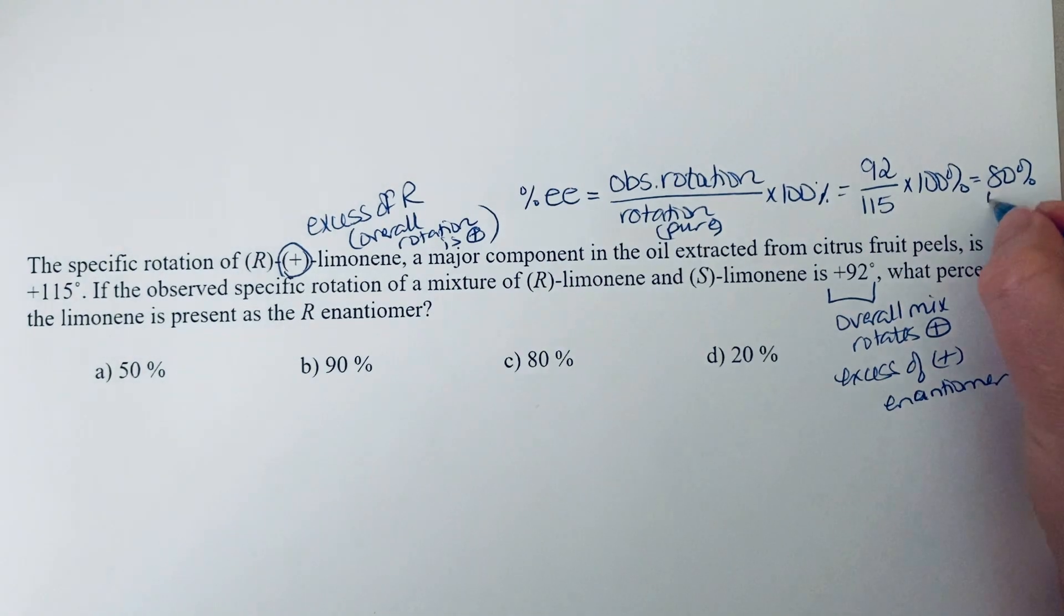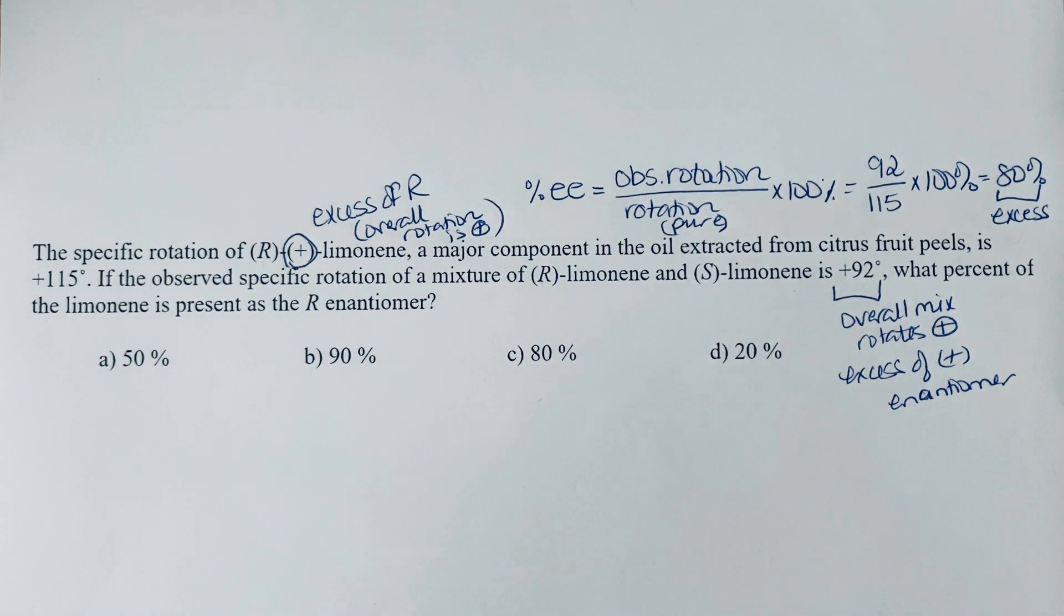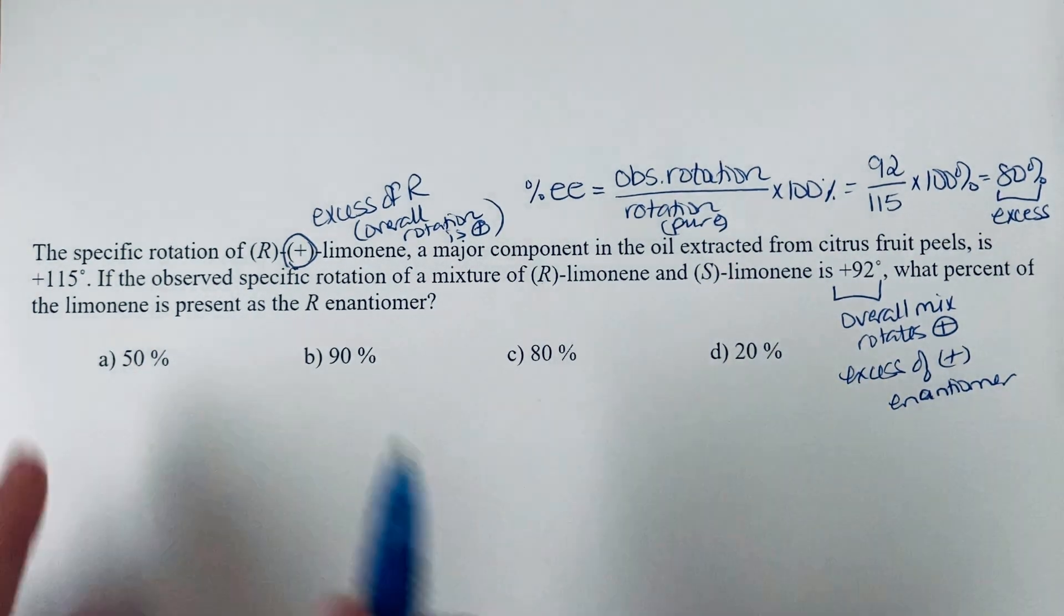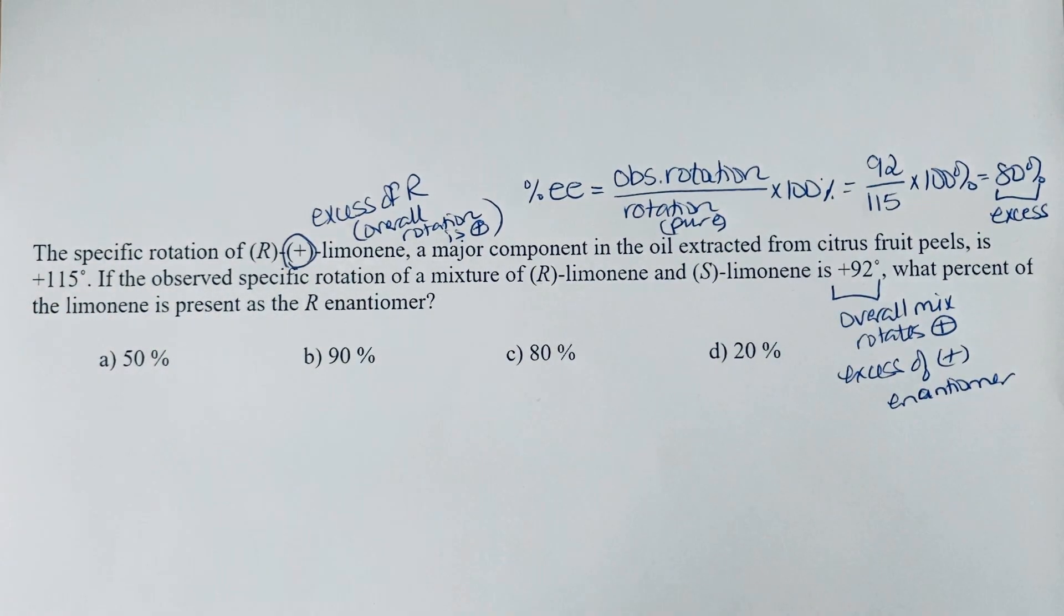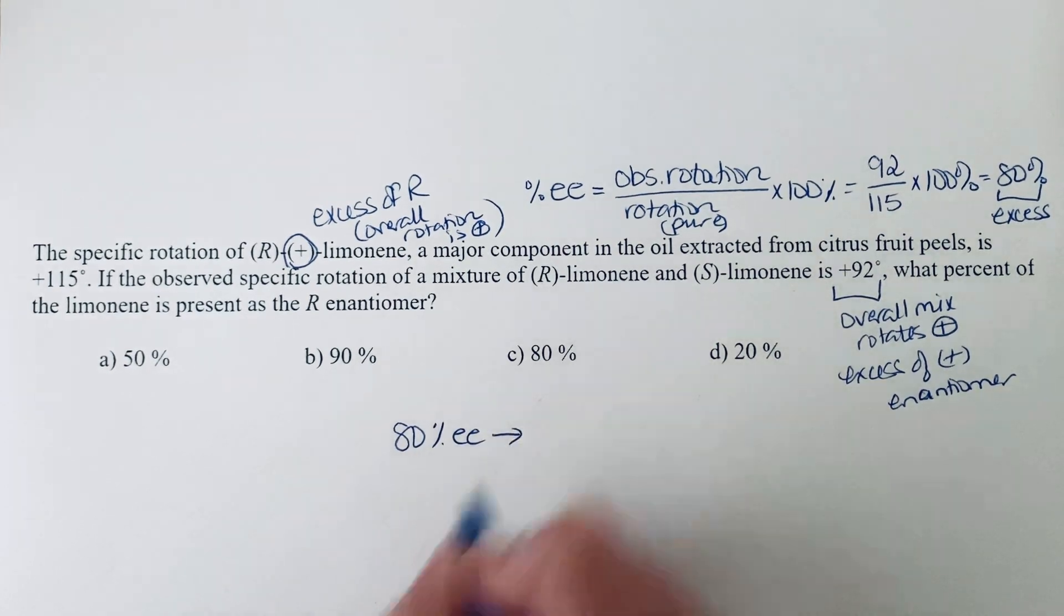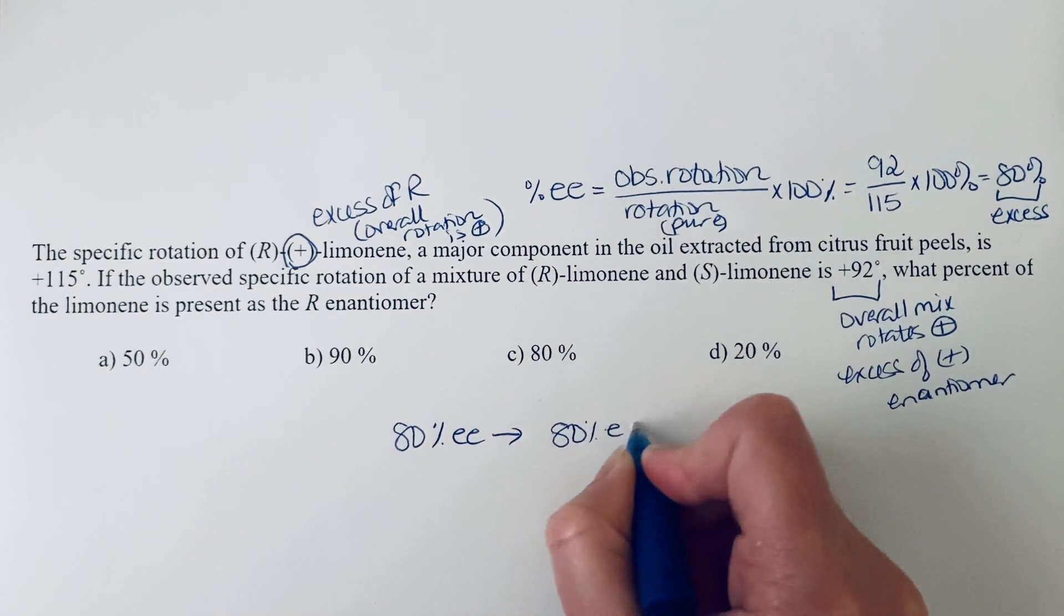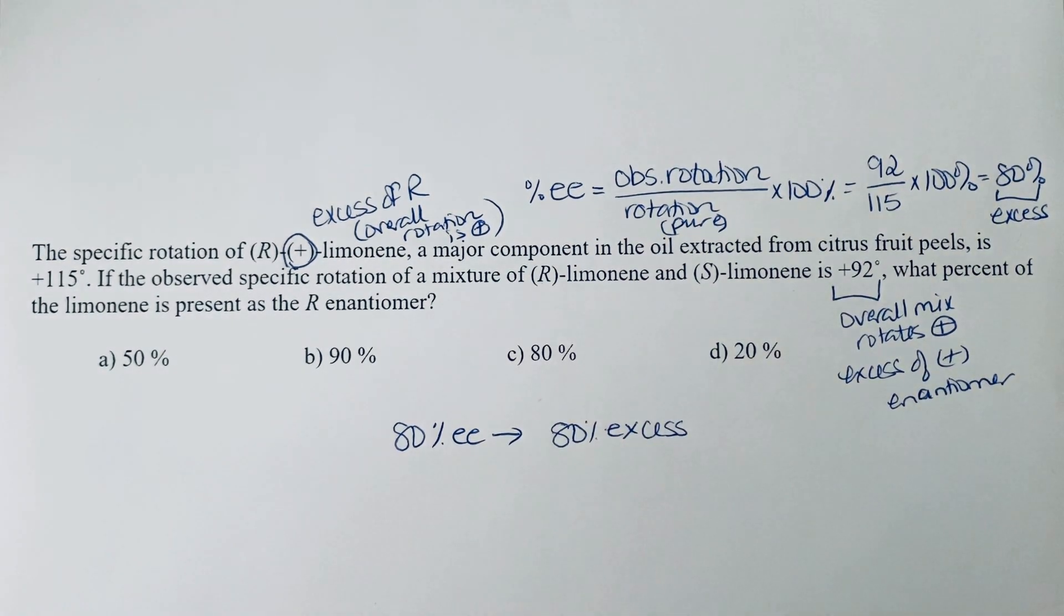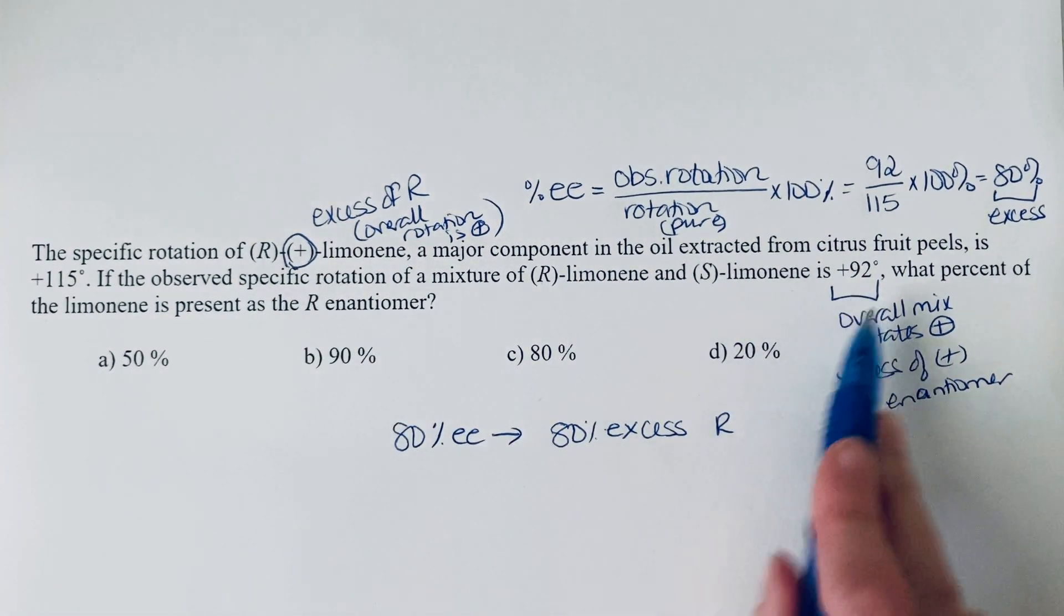So in excess of what? That means in excess of the racemic, because that portion is canceling out. That's why your observed rotation is lower than the pure rotation—because some of it is being canceled by the enantiomer. So 80% EE means that you have definitely 80% of excess R. And we say it's R because we know the R is positive and we know the overall is positive.